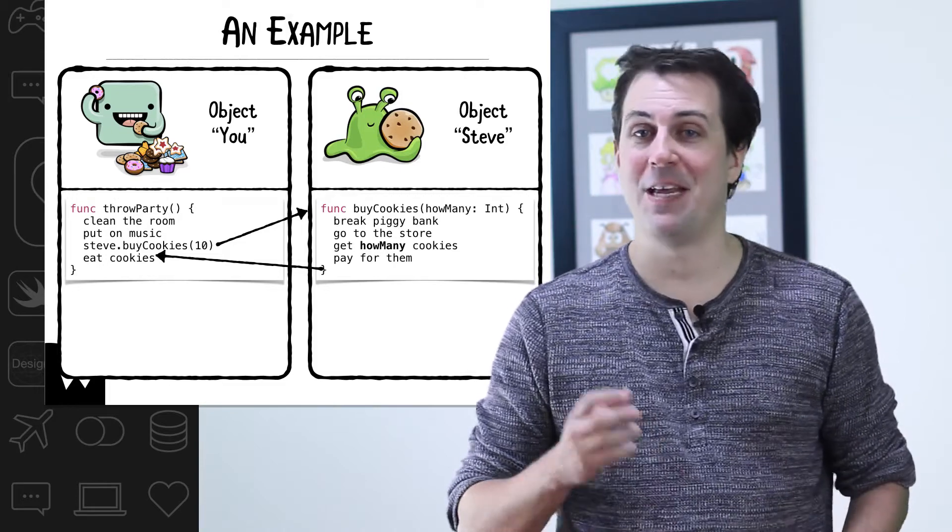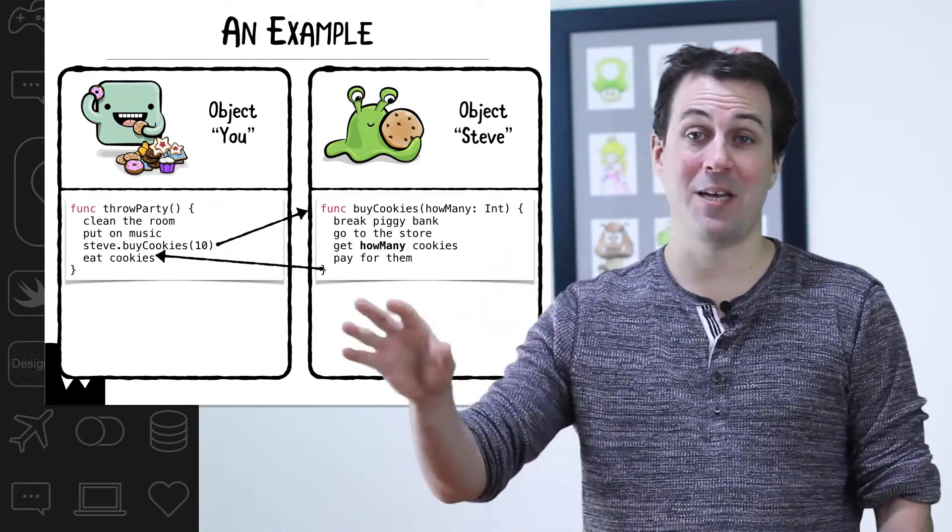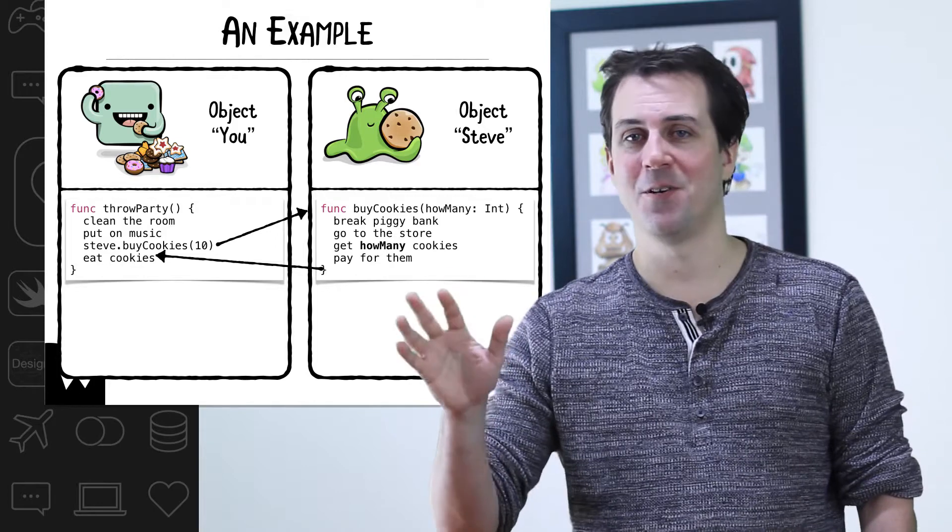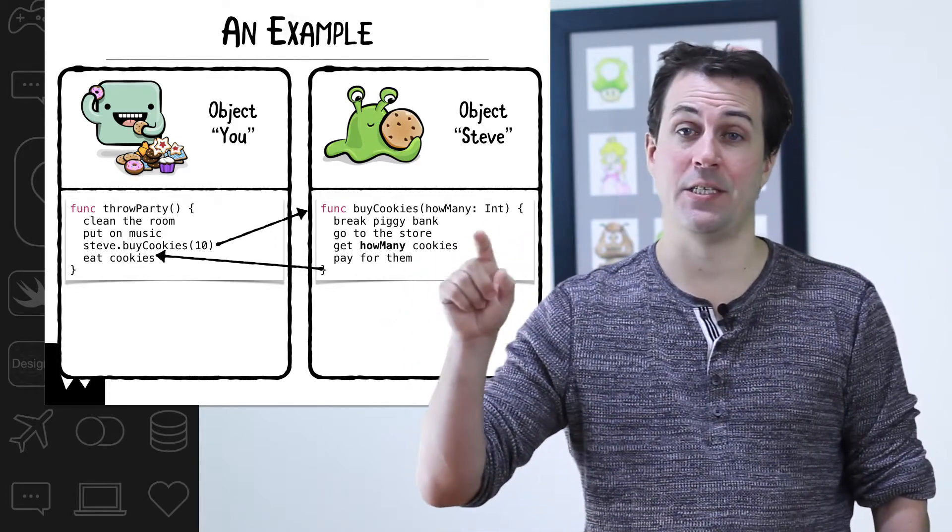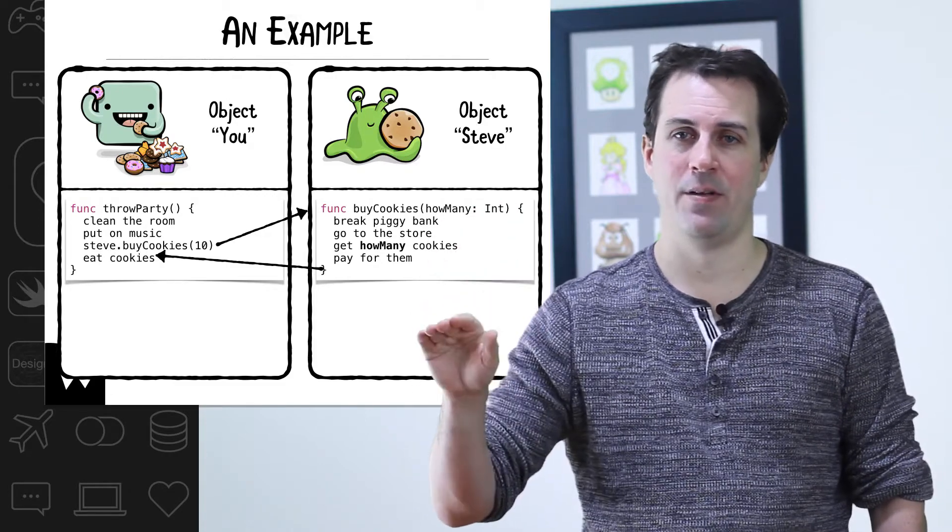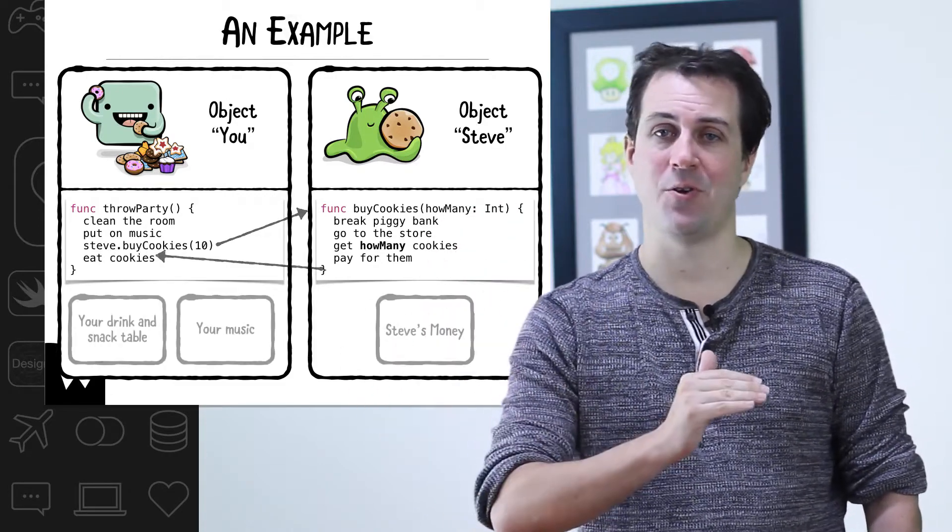Fortunately, you have another object friend named Steve who lives next to a convenience store. So you send a message to Steve saying, hey, can you bring some cookies? The computer now switches over to Steve and executes his buy cookies method from the top to the bottom. When it's done, it switches back to your code.